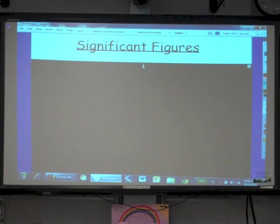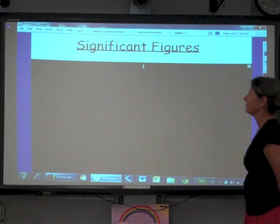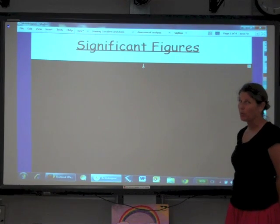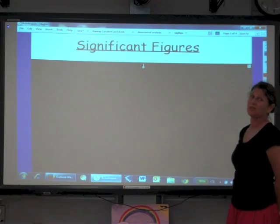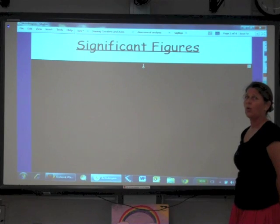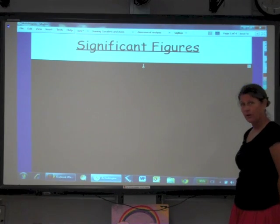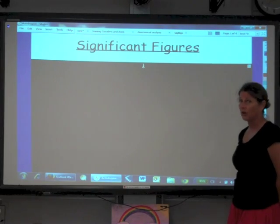And the reason that we talk about significant figures is we need to know how to round an answer. We do lots of mathematical calculations in chemistry, and we need to know that when we get an answer, how many numbers do we actually report? Do we report 15 digits because that's what it says on our calculator? Or do we think about this and determine how we round our answer?